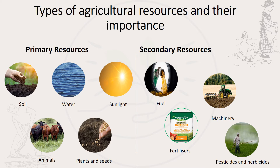They say if you're eating today, thank a farmer — and I agree with that, because farmers use agricultural resources in order to produce agricultural products. Agricultural resources can be divided into two broad categories: primary and secondary resources. Primary resources are resources that come from nature, while resources that are made by people from primary resources are called secondary resources.